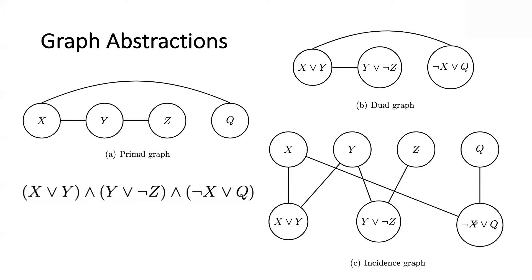If you're talking about a property of a graph known as tree width — very famous — you can offer three kinds of guarantees: based on the tree width of the primal graph, the dual graph, or the incidence graph. You'll see people say incidence tree width, dual tree width, primal tree width. Just like you have different graph abstractions, there are different properties of a graph. I mention tree width because it's very famous and has been subjected to extensive study. There's also branch width, path width, and these get used.